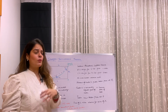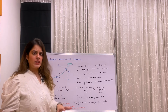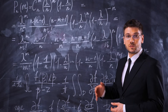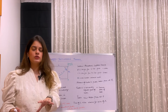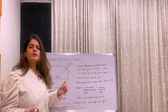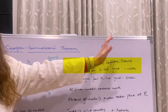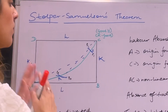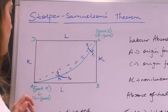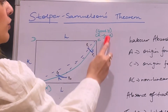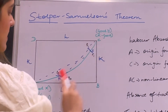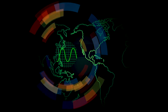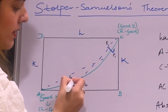Now we come to the crux of this theorem. I've drawn a simplified diagram — in textbooks and online you'll find more complicated versions, but my aim is to explain the theorem in the simplest way. This is an Edgeworth Box diagram. Point A is the origin for the labor-intensive good — cloth — and point C is the origin for the capital-intensive good — steel. The green line is a non-linear contract curve. In the absence of trade, production takes place at point R.